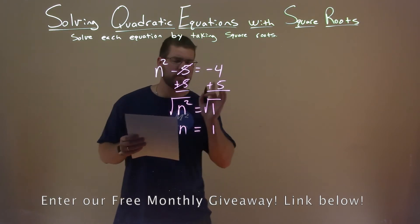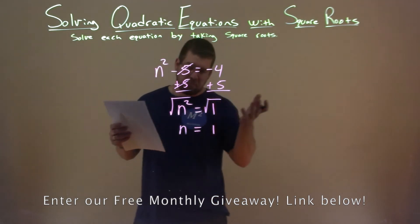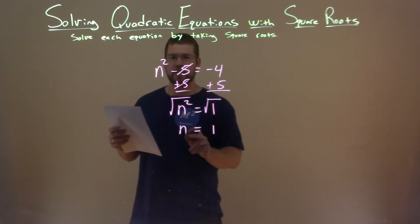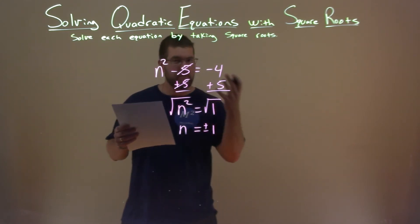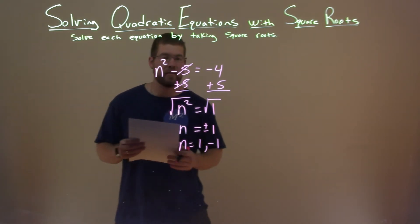But we can't forget, and this is probably where you're going to make a mistake. A lot of students make this mistake. When we take the square root over the equal sign, that's going to be a plus or minus. Make sure we bring both of those there. So n is equal to a positive 1 and a negative 1.